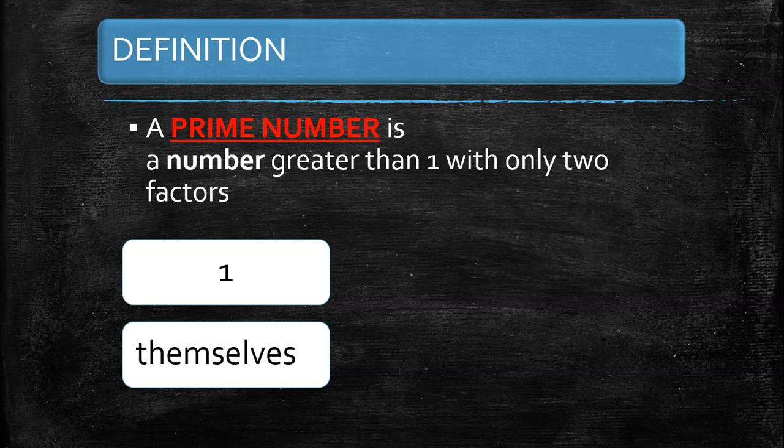Definition alone is not enough. One is a special number — it has only one factor, which is itself. So one is not considered a prime number. The number must have only two factors.